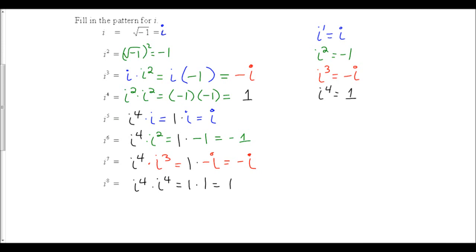Continuing the pattern: i to the first is i, i to the second is negative 1, i to the third is negative i, i to the fourth is 1, i to the fifth is i, i to the sixth is negative 1, i to the seventh is negative i, and i to the eighth is positive 1. This pattern keeps repeating itself. We can always simplify i to an exponent down so that we have only a single power of i in our final answer.